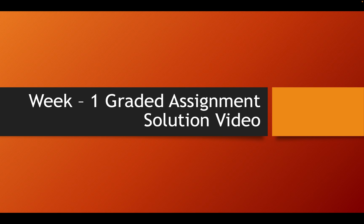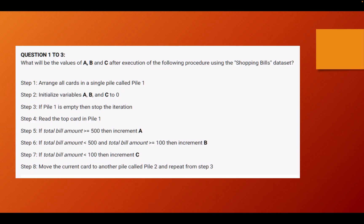So without further ado I think we should jump into the first question. You can see that this particular steps are actually valid for questions 1 through 3. Let's see what the question reads. It says what are the values of A, B and C after the execution of the following procedure using the shopping bills dataset.